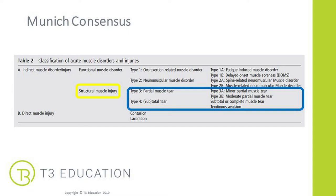The next injury we're focusing on is a contusion or laceration, which is slightly different from the structural muscle injury as it's a direct muscle injury — caused by force or contact. For this online learning, we'll start with the structural muscle injury and the science behind it, then into the contusion, and then focus on the sports massage guidelines around both types of injuries.